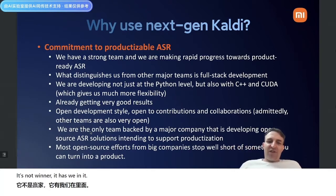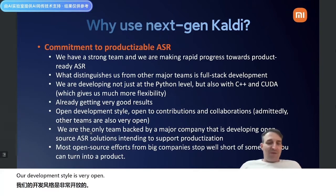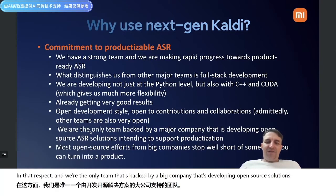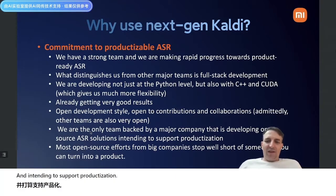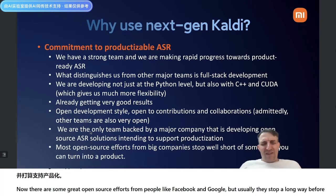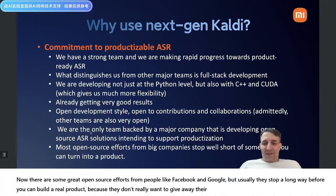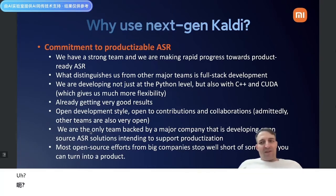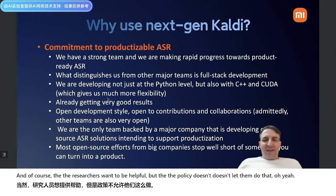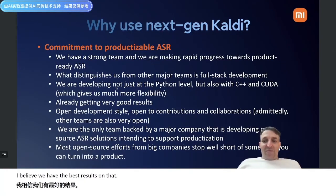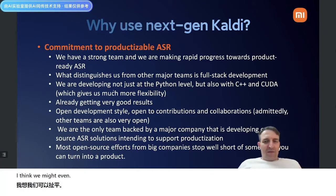We have pretty good results on AI Shell too. Our development style is very open — we always answer questions fast. We're the only team backed by a big company developing open-source solutions and intending to support productization. There are great open-source efforts from Facebook and Google, but they usually stop well before you can build a real product, because they don't really want to give away their secrets and policy doesn't let researchers do that.